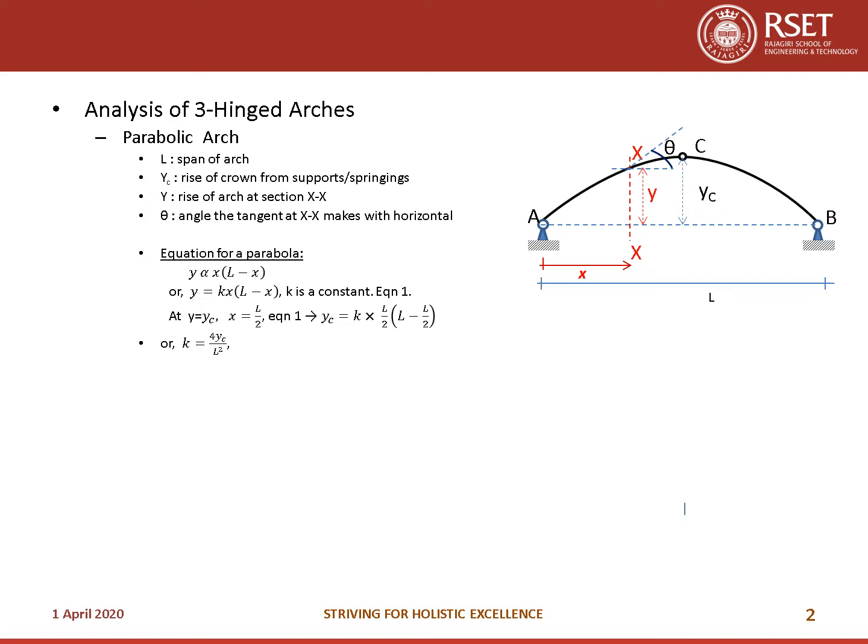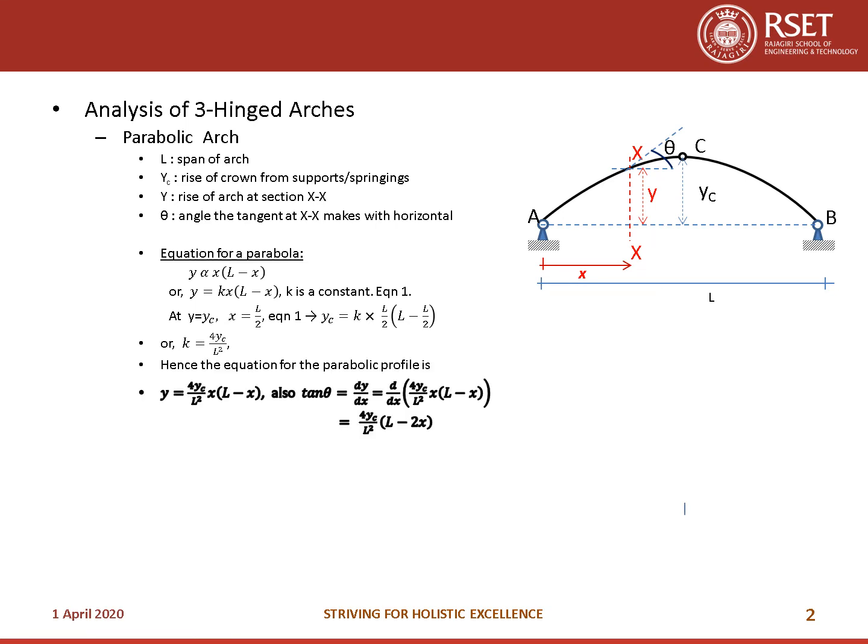To get the profile of the arch, which is an equation of a parabola, we write Y proportional to X(L − X), or Y = KX(L − X) where K is the constant of proportionality — call this equation 1. At Y = YC, X = L/2 because the hinge is at mid-span. Substituting X = L/2 gives YC = K · (L/2)(L/2), so K = 4YC/L². The parabolic profile equation is Y = (4YC/L²) · X(L − X). The angle theta is found from tan θ = dY/dX = (4YC/L²)(L − 2X).